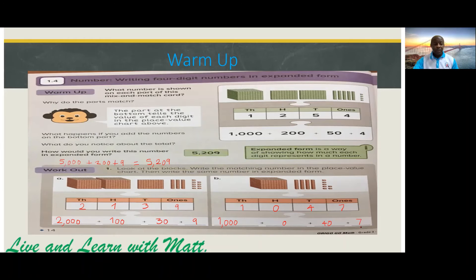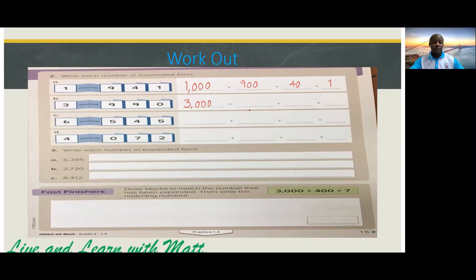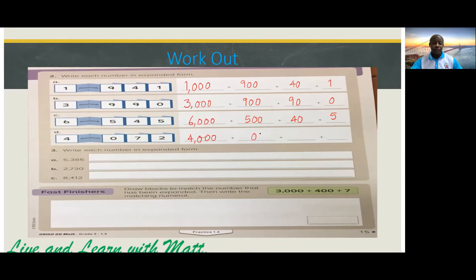Now let's go on to number two — write each number in expanded form. Part A: one thousand plus nine hundred plus forty plus one. Part B: three thousand plus nine hundred plus ninety plus zero. Part C: six thousand plus five hundred plus forty plus five. Part D: four thousand plus zero plus seventy plus two.